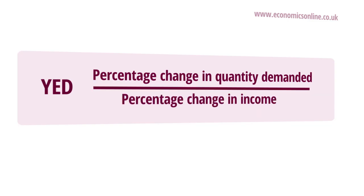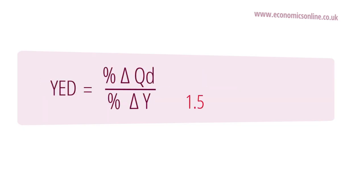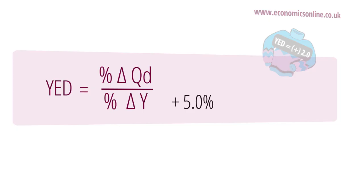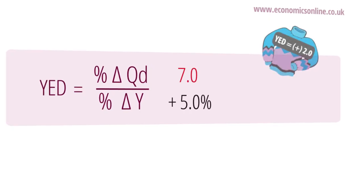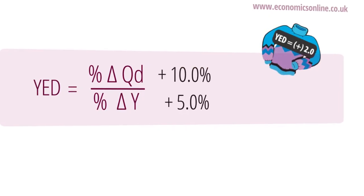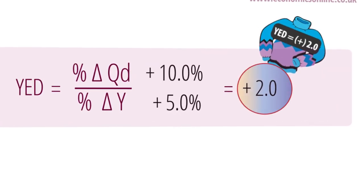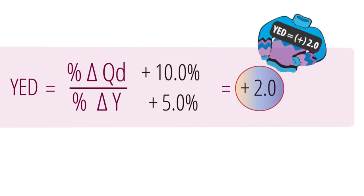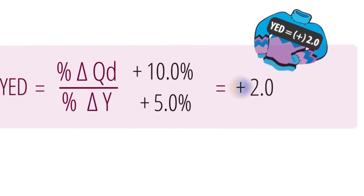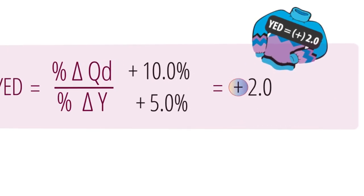For example, if income rises by 5% in a year and the demand for clothing increases by 10%, then the YED for clothing is +2.0. The result is a positive one — as income rises, so does the demand for clothing, in this case by a greater proportion than the increase in income.